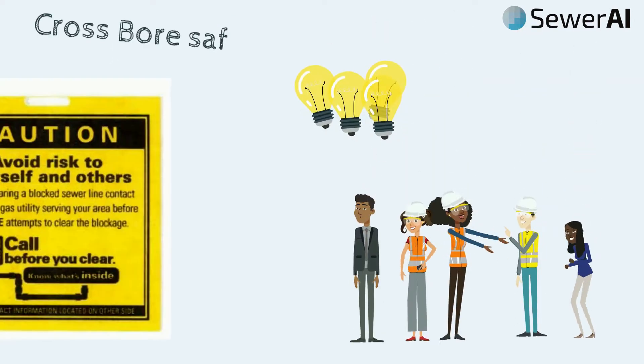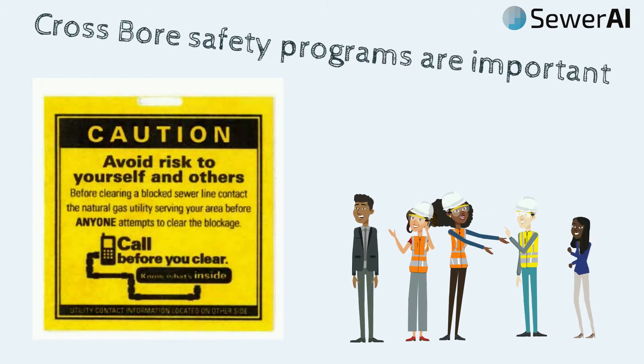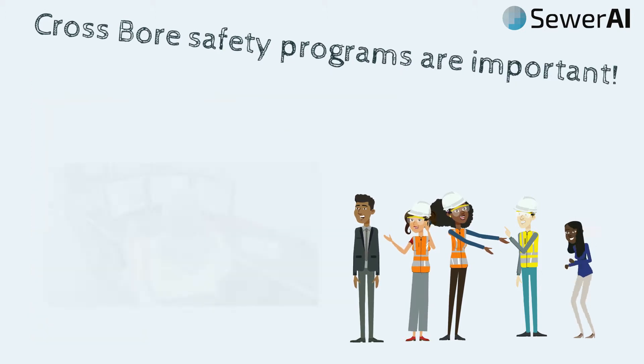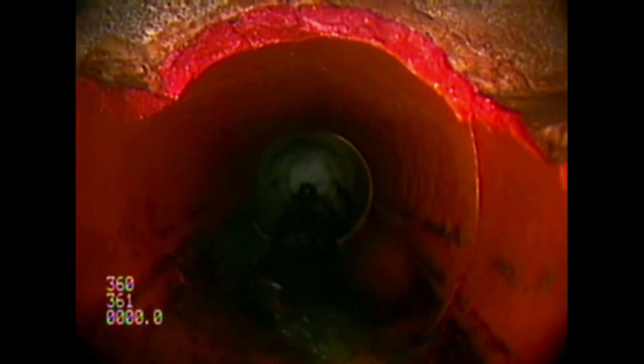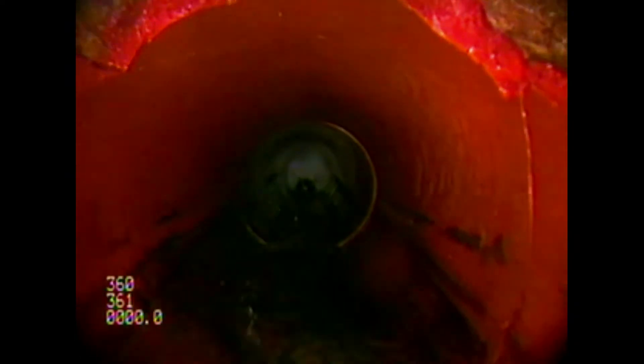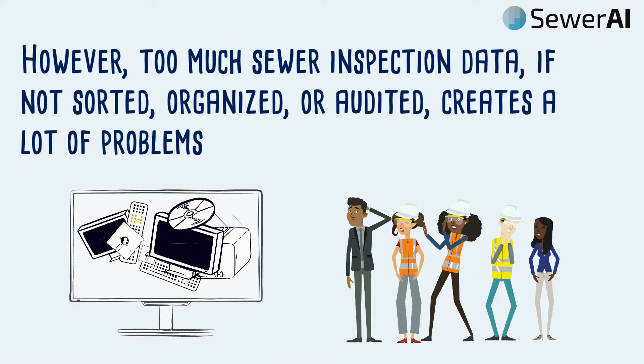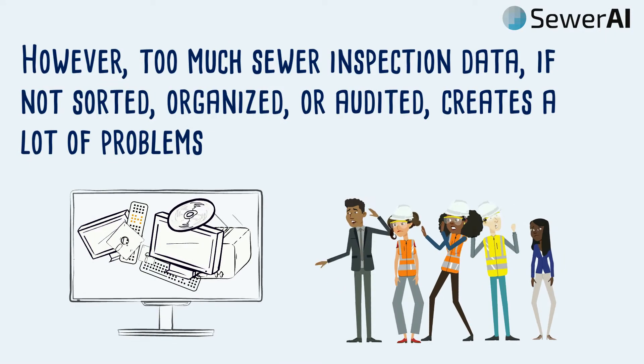Thankfully, for the last 10 plus years, most U.S. gas utilities have invested significant resources in CCTV sewer inspection programs to address this issue, locating and capturing video of the networks of mainline and connecting lateral pipes in order to identify legacy crossbores and also to support construction of new gas installations.